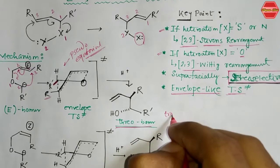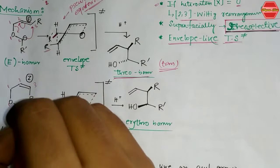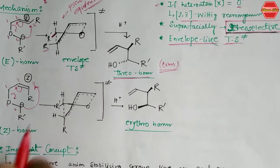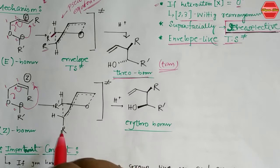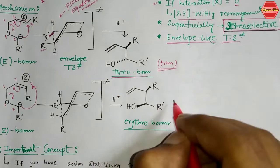Similarly, if you have the Z-isomer, the negative charge undergoes 2,3-sigmatropic rearrangement through an envelope-like transition state. In this case, the R group is in pseudo-axial and R' is in pseudo-equatorial position. From bond breaking in this geometry, you get the erythro isomer, which is the cis product. So: E-isomer gives threo (trans), Z-isomer gives erythro (cis).